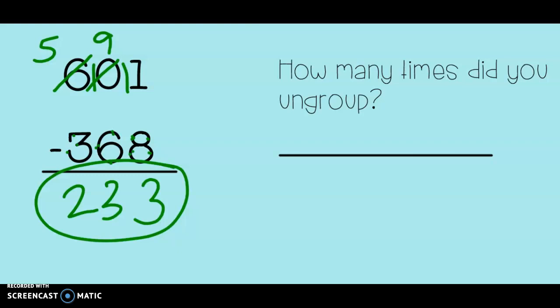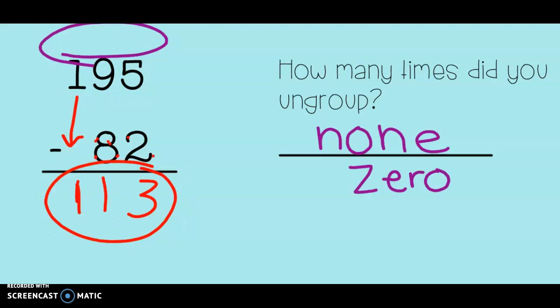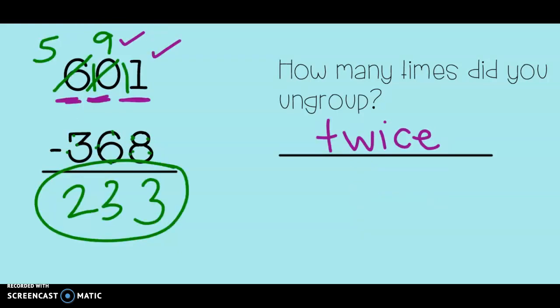Now let's take a look and see which numbers needed more. Did I need more ones? Yes, I did. Did I need more tens? Yes, I did. And I can stop there because I don't have any thousands, so I can't get any more hundreds. The hundreds just gave away to the tens. So two times or twice did I need to ungroup in this problem. It's funny because the last problem I did not need to ungroup at all, but in this problem, I needed to ungroup twice.